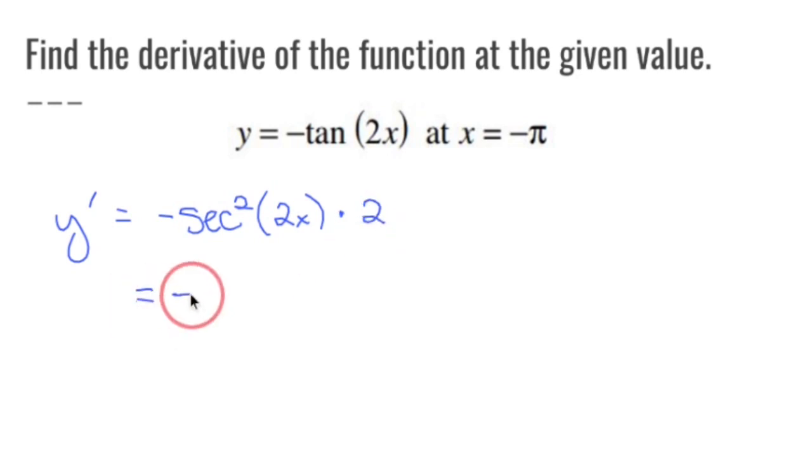So this ends up being negative 2 secant squared 2x. That's what y prime is. But I don't want y prime. I want y prime of negative pi.